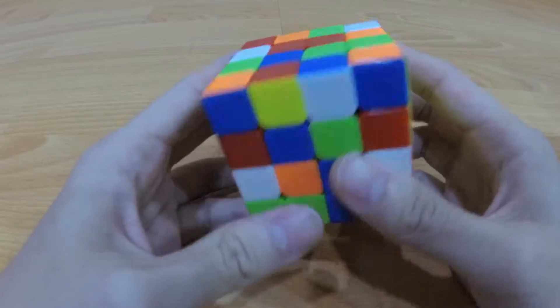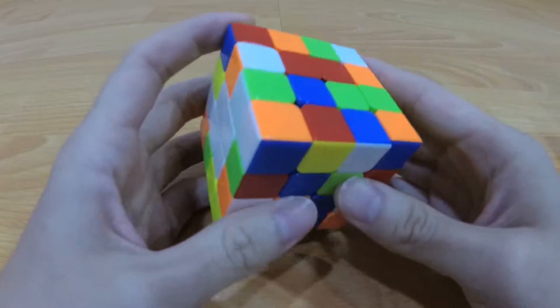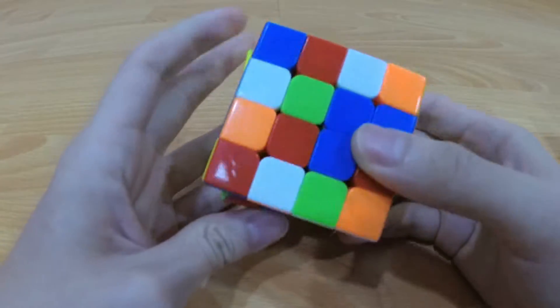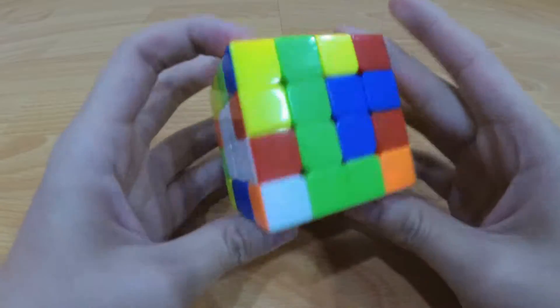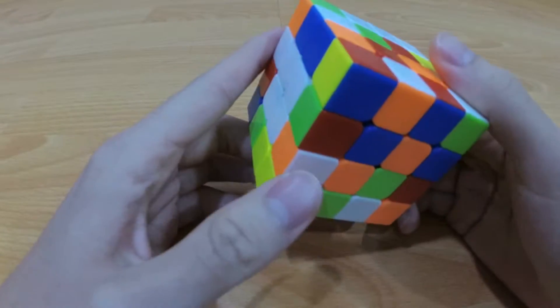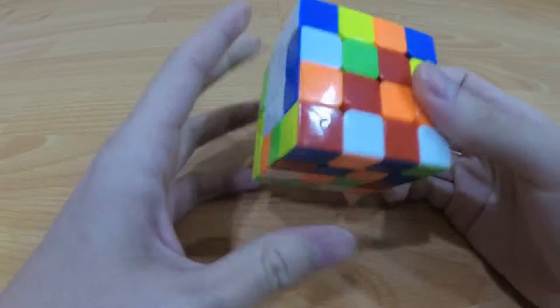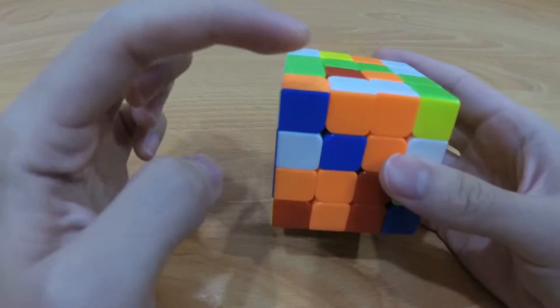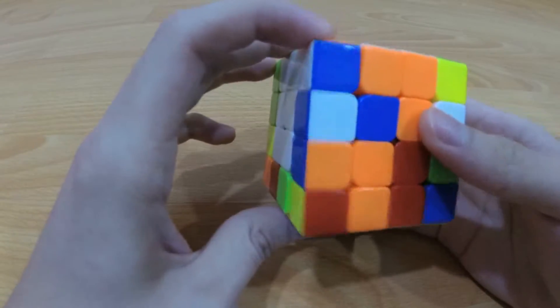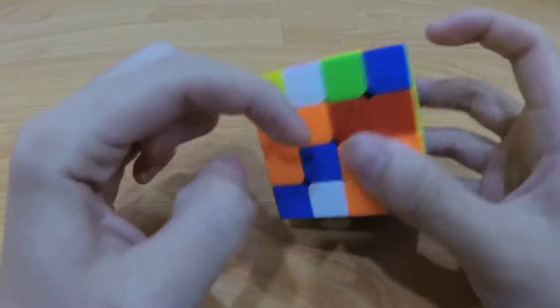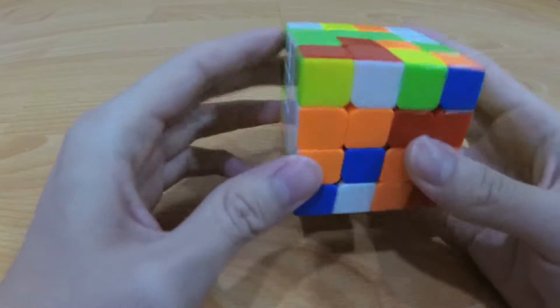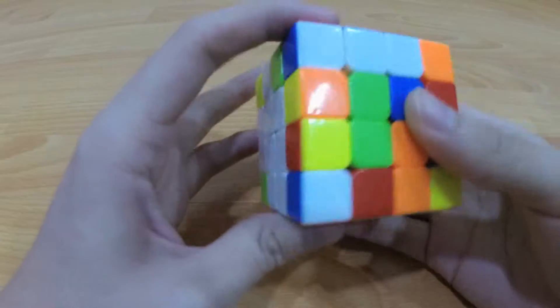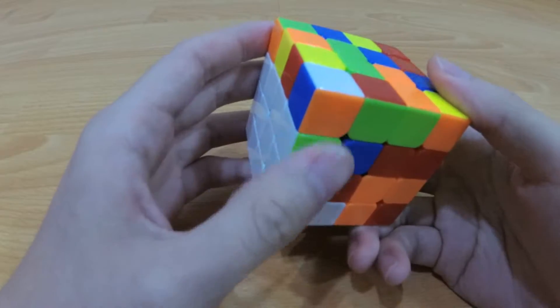Alright, so for this case, I see this green and white first so I would just do like so. And then I notice that these two, white and orange. So I would do like so to match it up. And I know that orange should be placed here. And then I see these two white and blue. So I can just do R2, U like so. And then put it at opposite green.